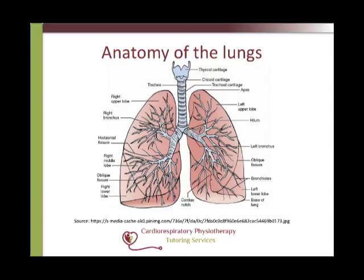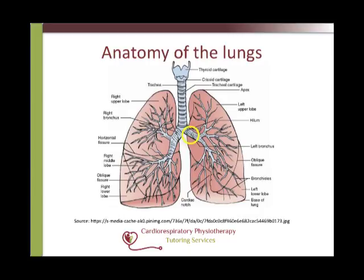The lungs are separated into five lobes: three on the right — the right upper, middle and lower lobes — and two on the left — the left upper and lower lobes. These lobes are further divided into lung segments. The upper and lower lobes are separated by the oblique fissure, and on the right the middle lobe is separated from the upper lobe by the horizontal fissure. The lungs are conically shaped with the base resting on the diaphragm and the apex extending two and a half centimetres superior to the clavicle. The hilum is a region on the medial surface where structures such as the primary bronchi, blood vessels, nerves and lymphatic vessels enter or exit the lung.